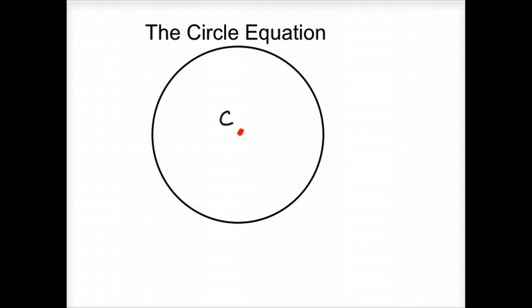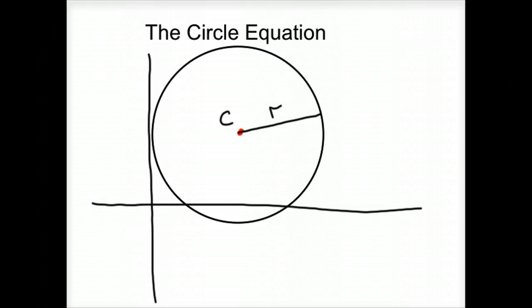So you've got a center, C, and a radius, R. Now if you overlaid this on a grid, on an xy-axis, say anywhere, so there's x and there's y.